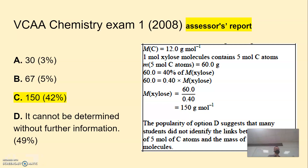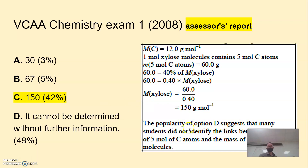In 2008, only 42% of students got this correct. Nearly half said it cannot be determined without further information — it is very rare that this option on multiple choice is actually correct. The assessor notes suggest many students failed to link the mass of five moles of carbon to the mass of one mole of xylose.